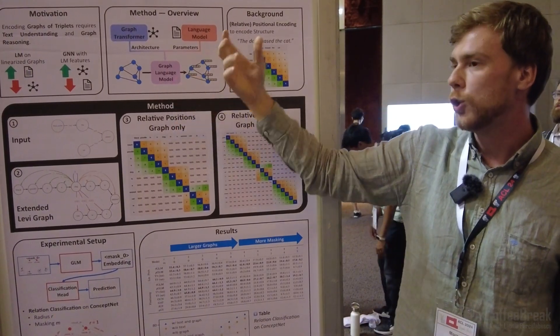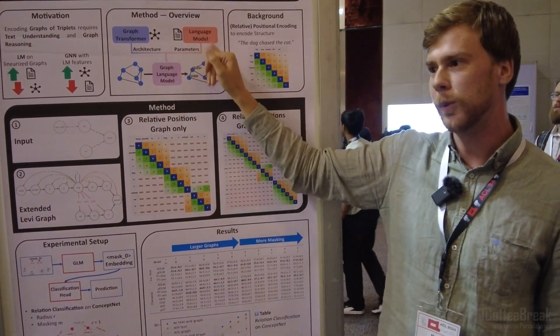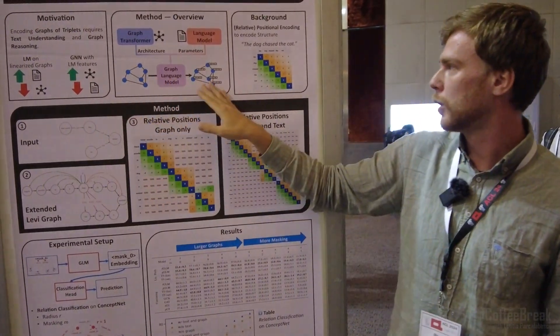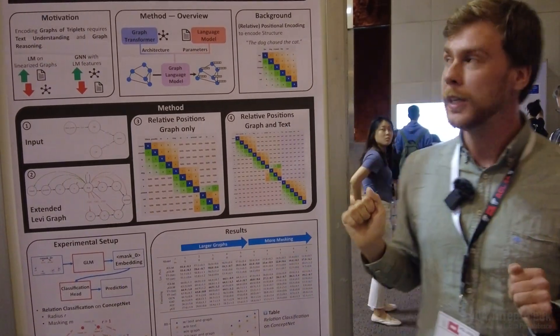You could also say that we take a graph transformer and initialize it with the parameters from a language model. And then we have a model which can take in such graphs and give an encoding for both the nodes and the edges.